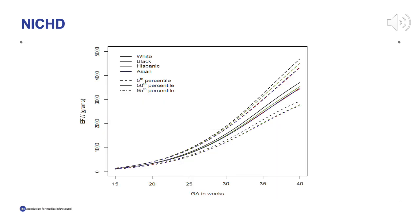This chart demonstrates the variations of fetal weight according to race and ethnicity as per the NICHD study. It was found that there is a statistically significant difference in fetal growth according to race and ethnicity.